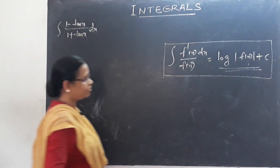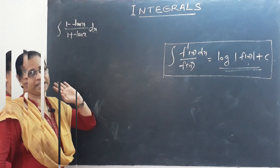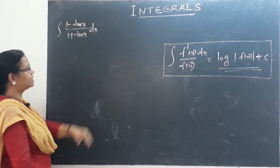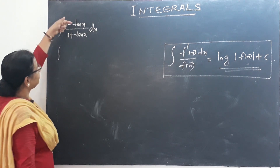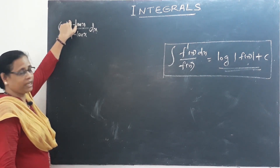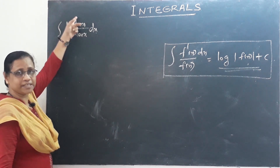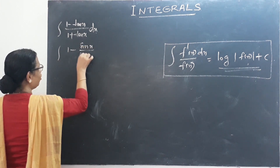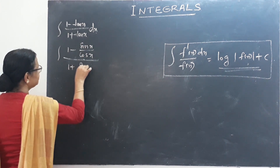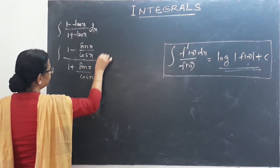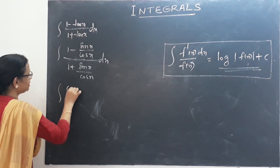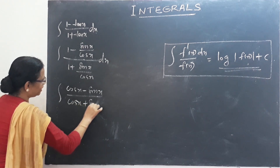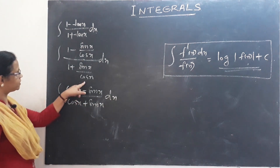Now you can apply the first method, then the second method, then the third method. Let's do a problem: the integral of (1 − tan x)/(1 + tan x) dx. The denominator is the key term. We can only apply the third method here, with (1 + tan x) in the denominator.